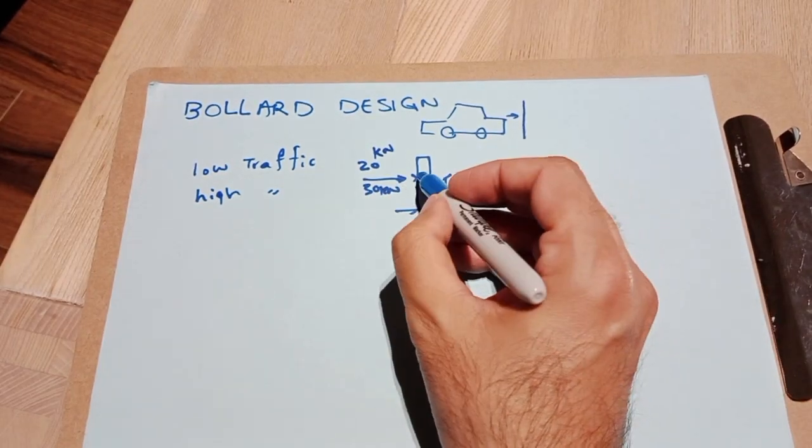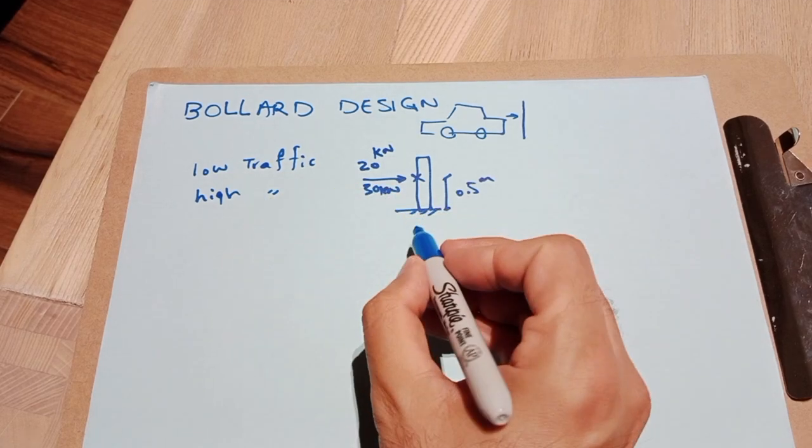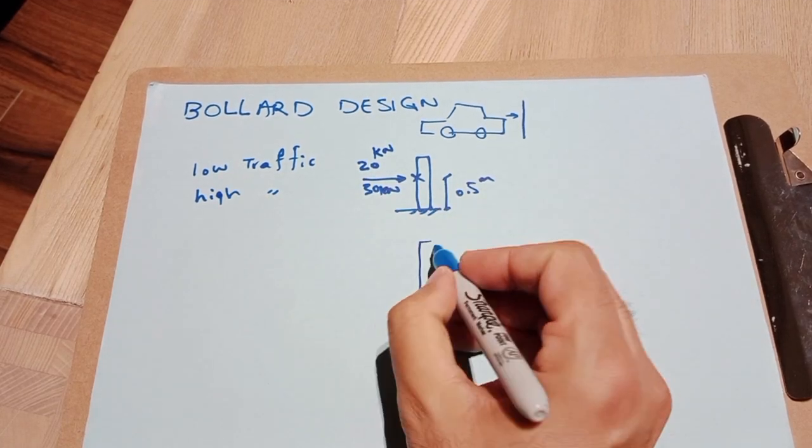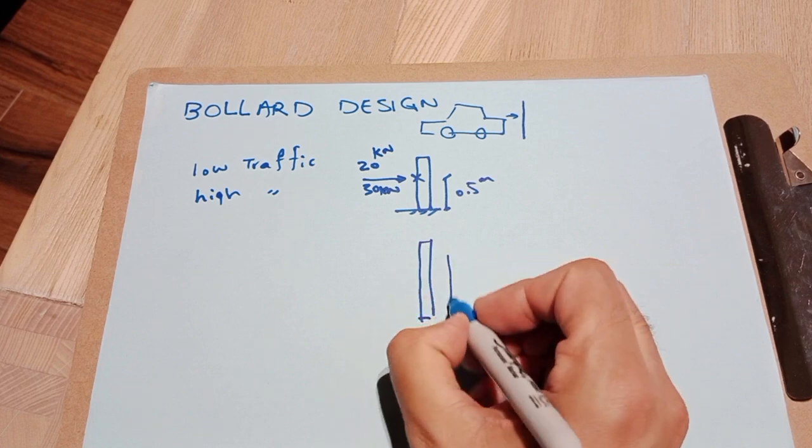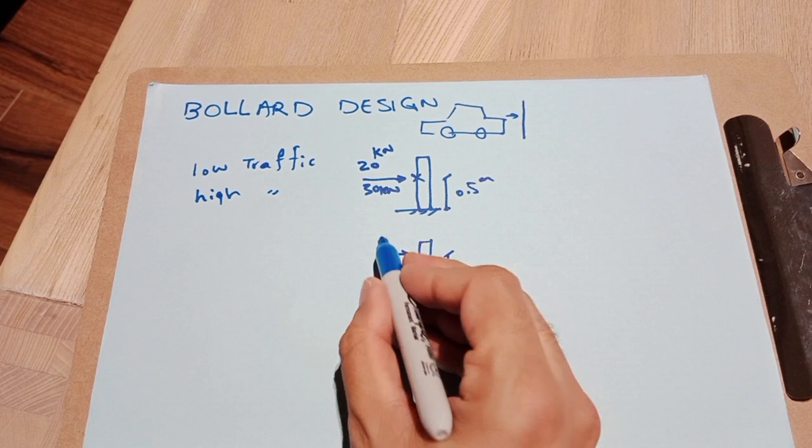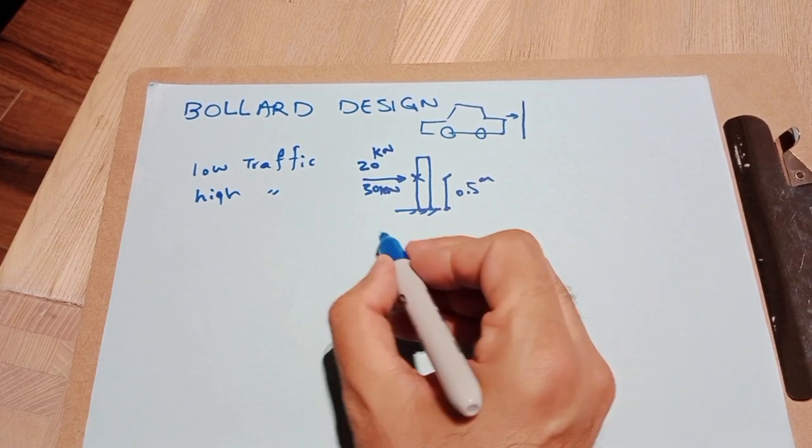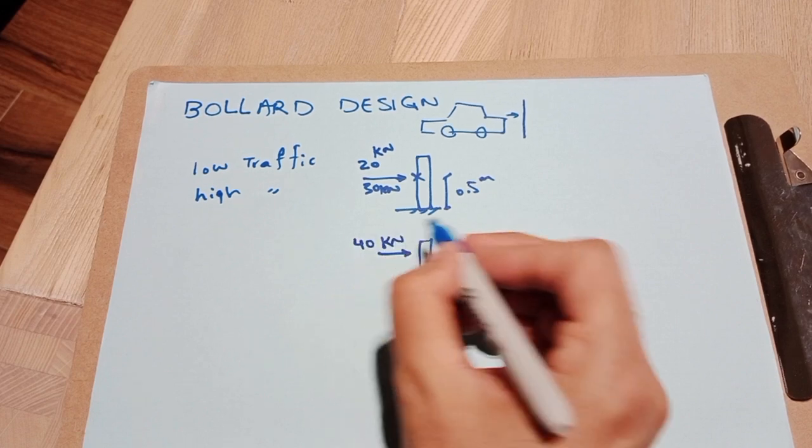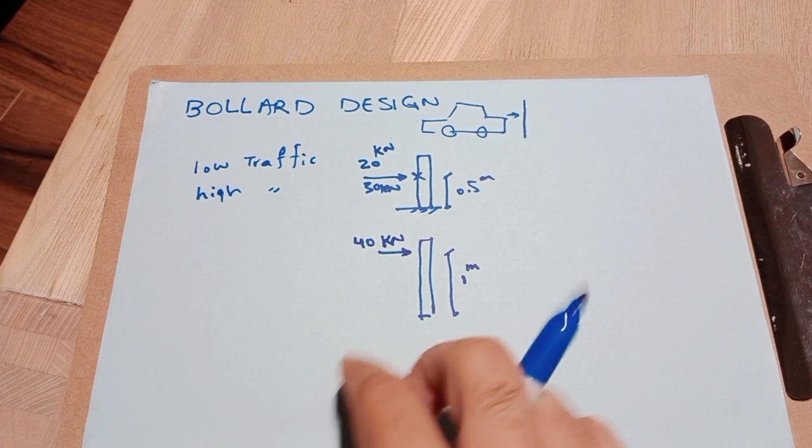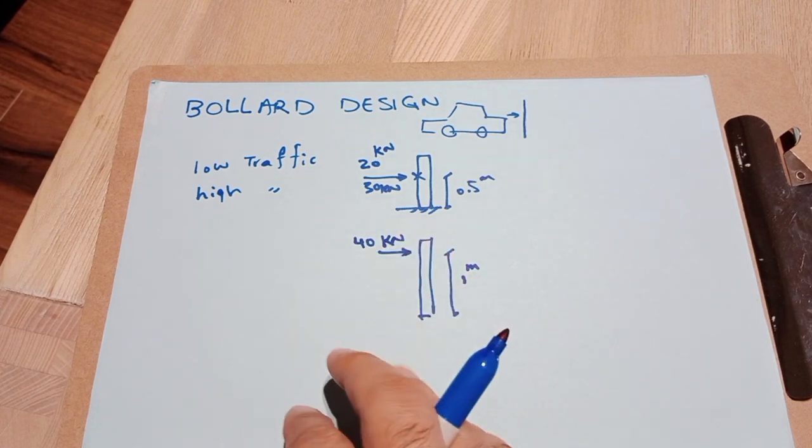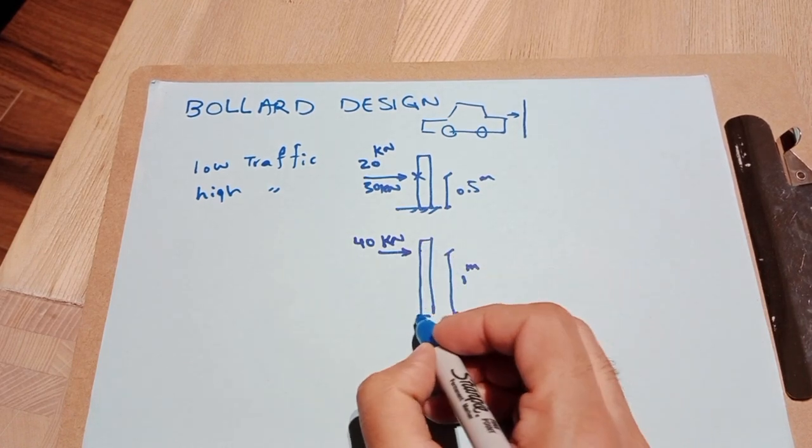For high traffic areas, we generally have the same concept, but the effect point is about one meter from the ground and the load is about 40 kilonewtons. In some areas, especially for some critical and industrial areas, you may go to 45 or 50 kilonewtons point load at one meter above the ground.